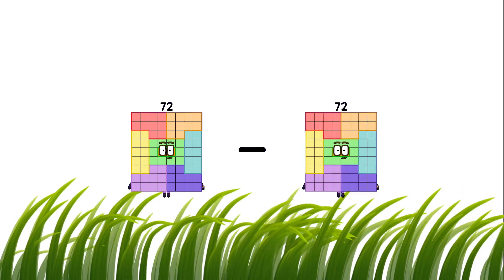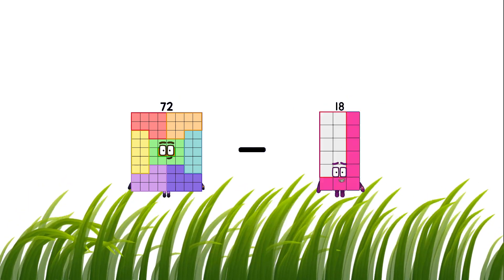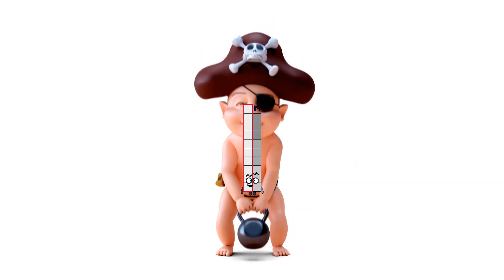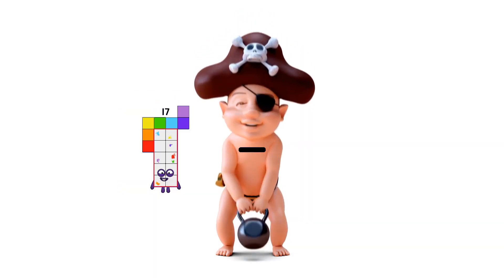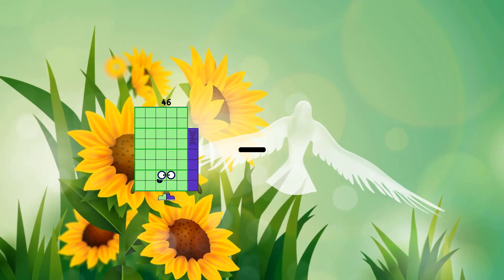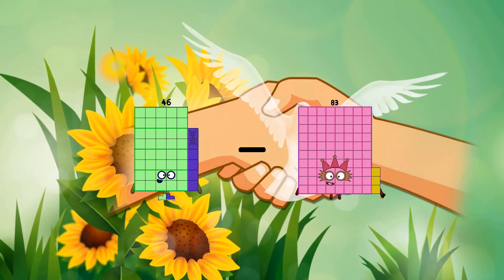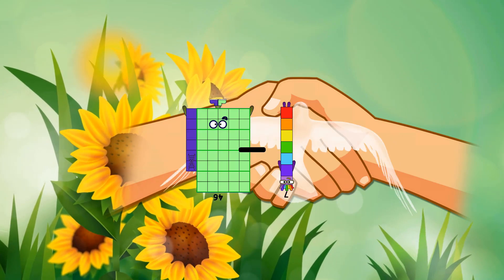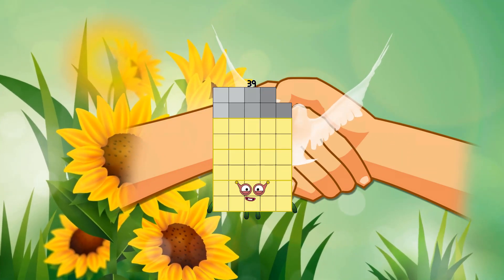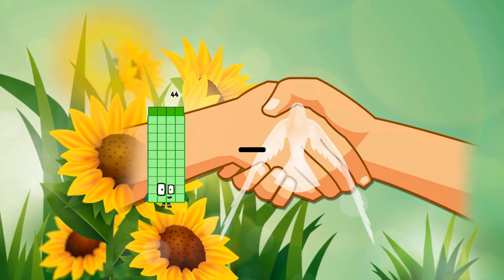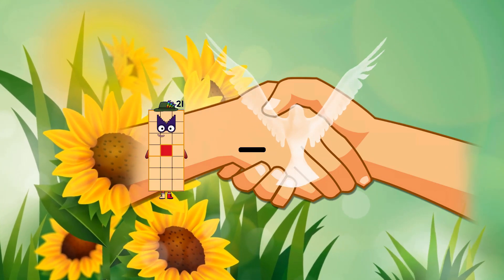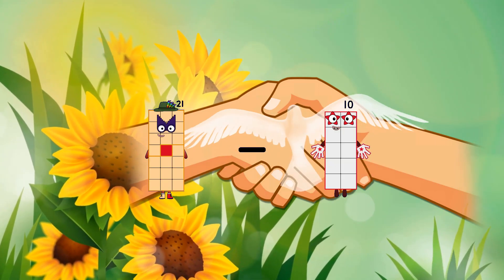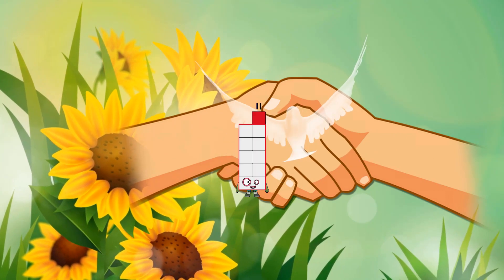72 minus 53 equals 19. 46 minus 7 equals 39. 21 minus 10 equals 11.